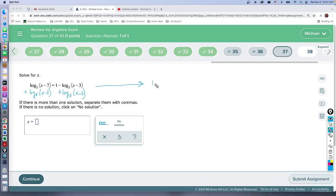And that's going to give us log base 5 of (x minus 7). Yeah, so they'll stay the same, x minus 7 plus log base 5 of (x minus 3).